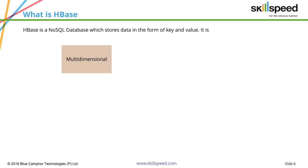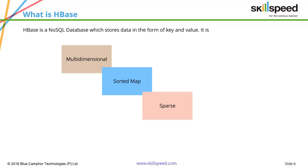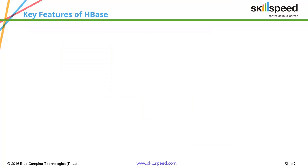HBase has several key characteristics. First, it is multi-dimensional — in a traditional RDBMS it is two-dimensional, meaning you need a row and column number to access data. In HBase it is at least three-dimensional: you need the row key, the column family name, and the column name. It is also a sorted map, meaning by default the data stored in HBase is sorted. It is sparse, meaning null values are not stored, and it is consistent.